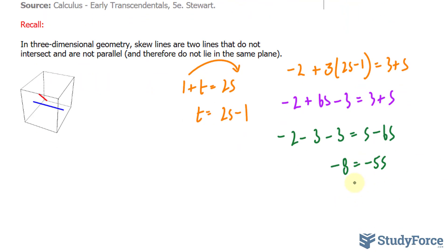And negative 8, divide both sides by negative 5. 8 over 5 is equal to s.